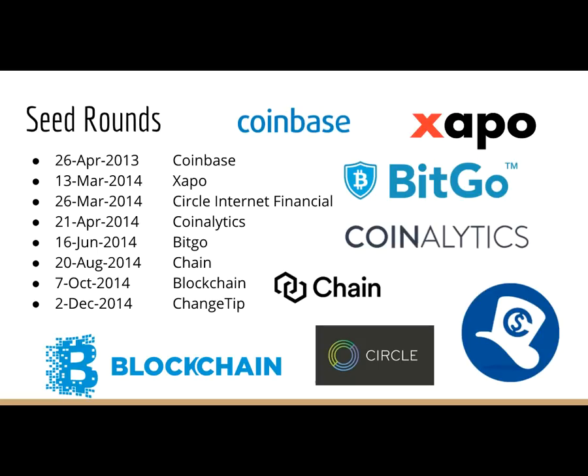Here's a quick splash of more Bitcoin startups and their seed rounds. Circle is kind of like Coinbase except Bitcoin is under the hood. Coinolitics de-anonymizes the blockchain. BitGo does security. Chain works on private blockchains. Blockchain.info is a block explorer, and there's ChangeTip.